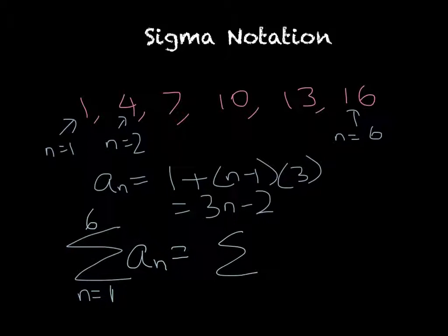So in this case, it's n equals 1 to 6, 3n minus 2.